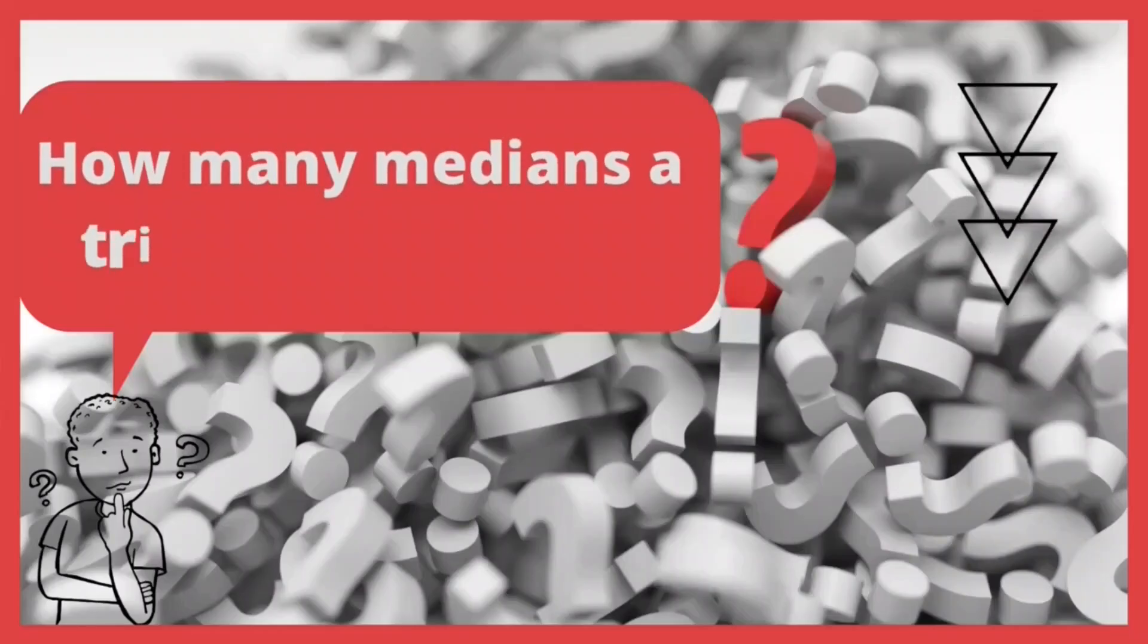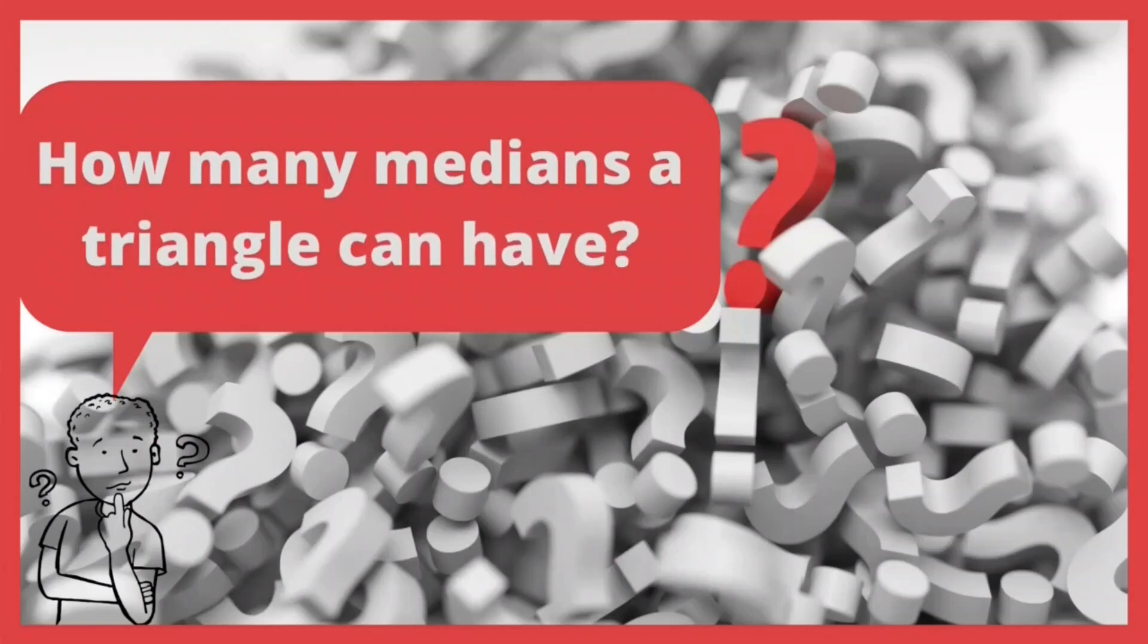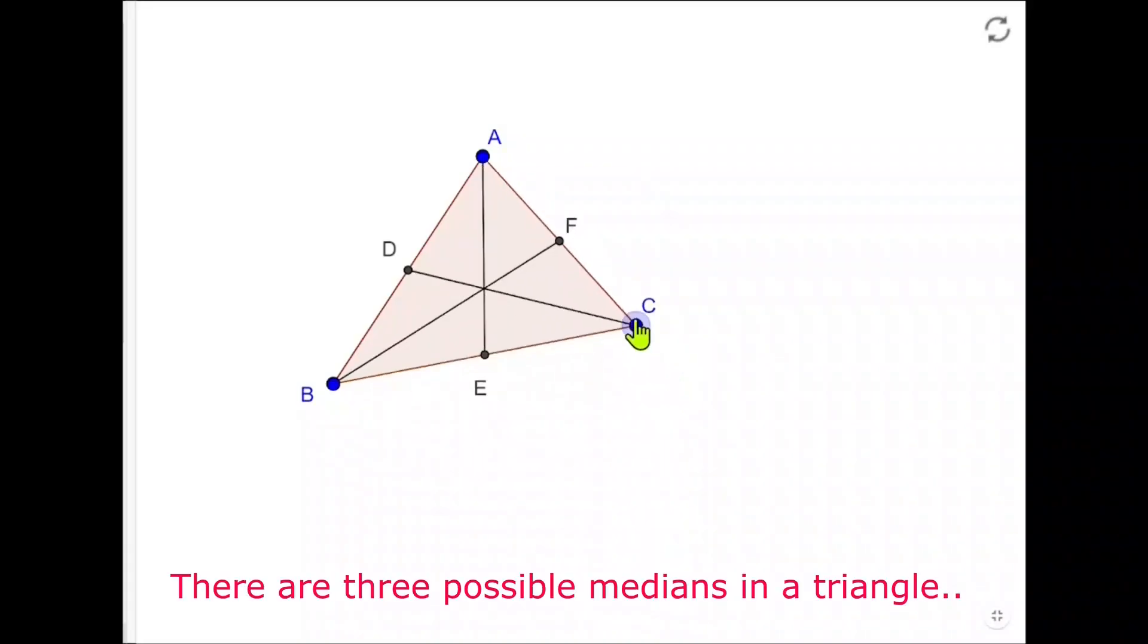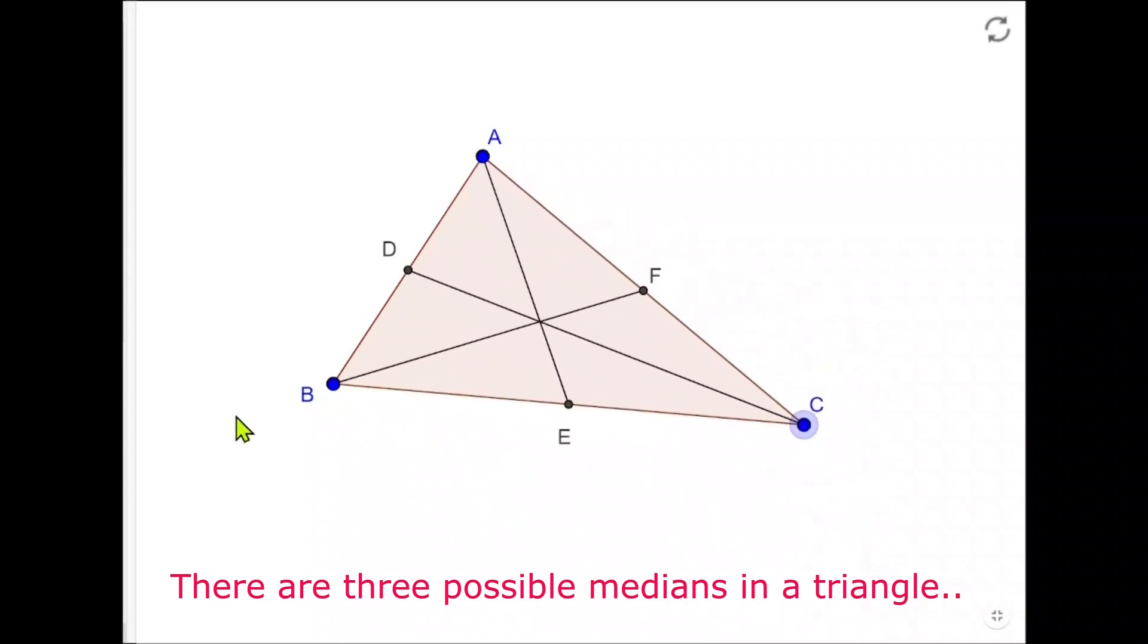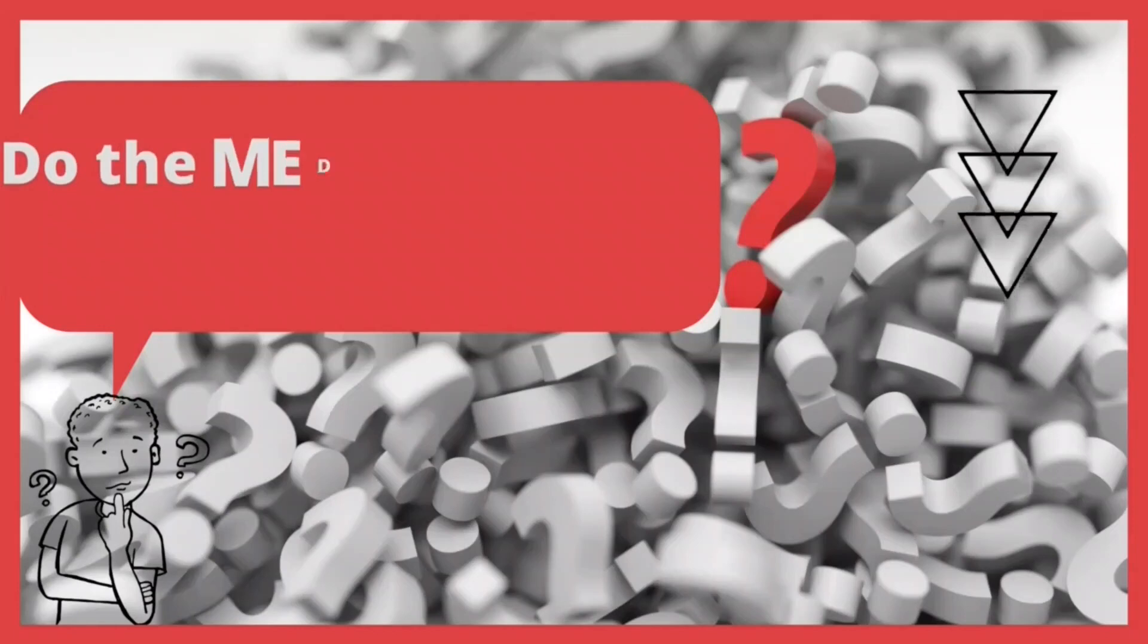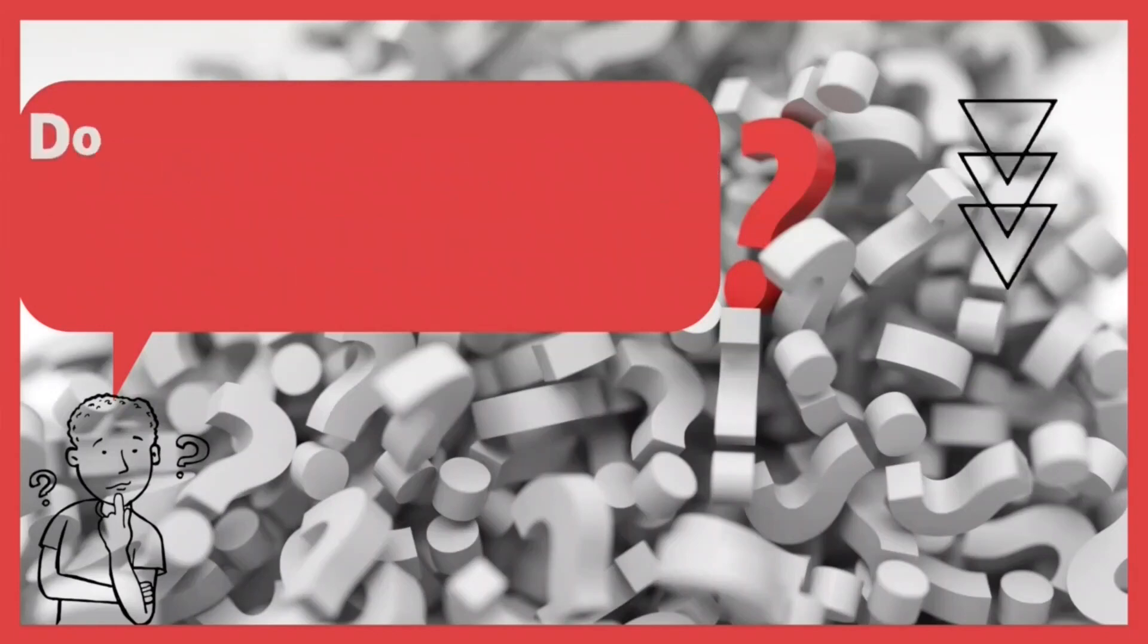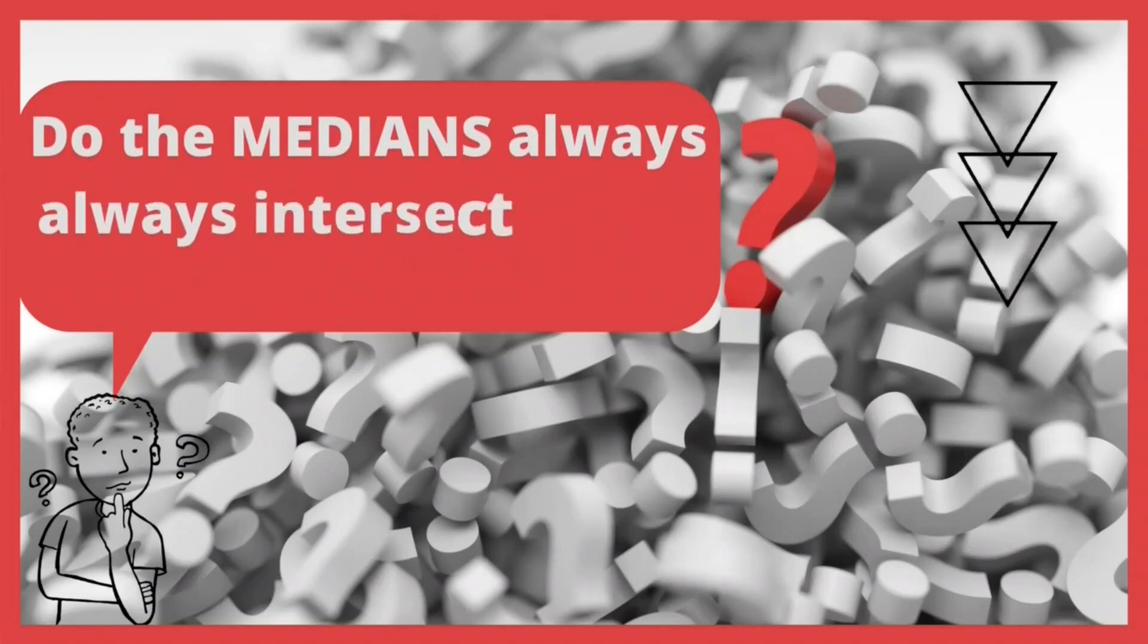Now as we have seen what medians are, one question comes to mind: how many medians can a triangle have? Since there are three sides, there are of course three midpoints and three possible medians. Next questions are: do the medians always intersect, and do the medians always intersect inside the triangle?